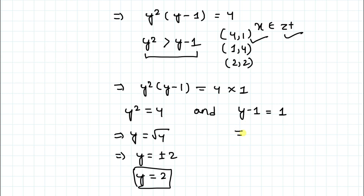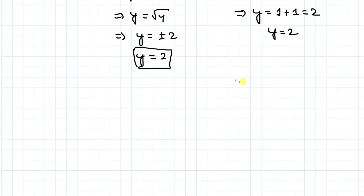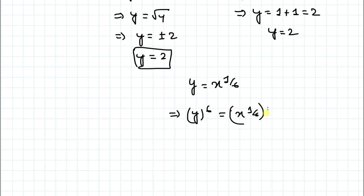From y minus 1 equals 1, taking the 1 to the left-hand side gives y equals 2. In both cases we get the same value, y equals 2. Since y equals x^(1/6), raising both sides to the 6th power gives y⁶ = x. Therefore x equals 2⁶, which means x equals 64.